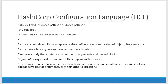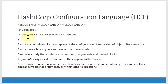Within the HashiCorp Configuration Language, I can represent a block by specifying what type of block it is, and I can add any number of labels to it. Following the label, I will have a curly bracket and can have a collection of arguments — that is, identifiers and expressions. Blocks are like containers that hold a collection of key-value pairs, and I can have zero to any number of labels. The arguments, after evaluating the expression, get assigned to the identifier. Depending on the block type, I can have any number of identifiers.